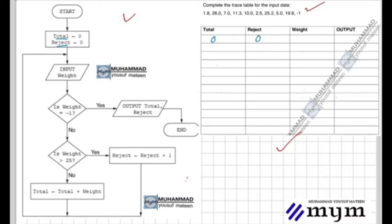Now let's see what values change on each line. The second rule says test data is given directly. Here the weight is 1.8, so we write 1.8 directly. We check: is the weight minus one? No. Is the weight greater than 25? No, this condition is not met. Total equals total plus weight. The last total value is zero, we add weight 1.8, so we get 1.8.